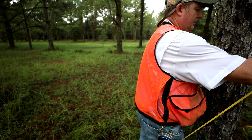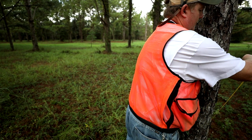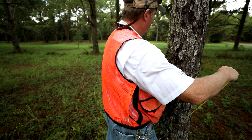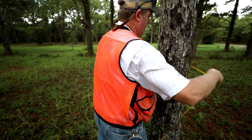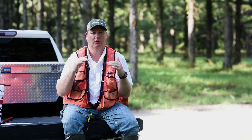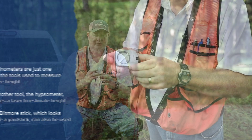This tape goes around the tree, and it's calibrated so you can read the measurement and get the actual diameter across the stem as if you were to cut it at four and a half feet. That cross-sectional area, if you were to cut a stem at four and a half feet, is called the basal area of that particular tree.